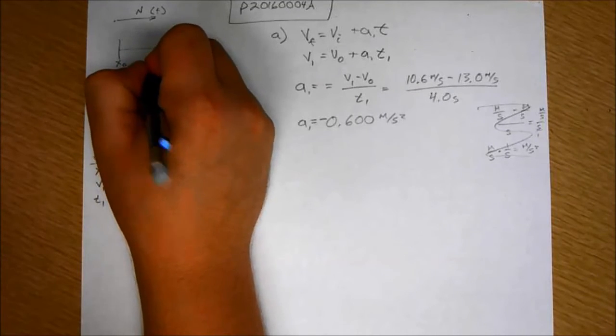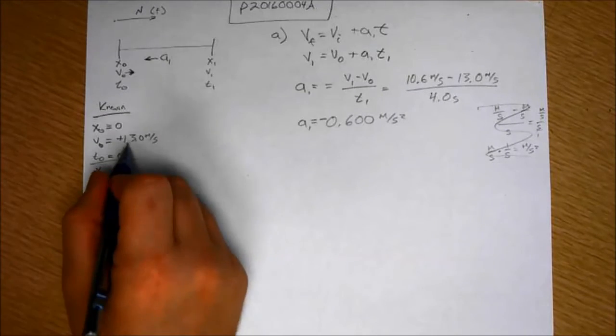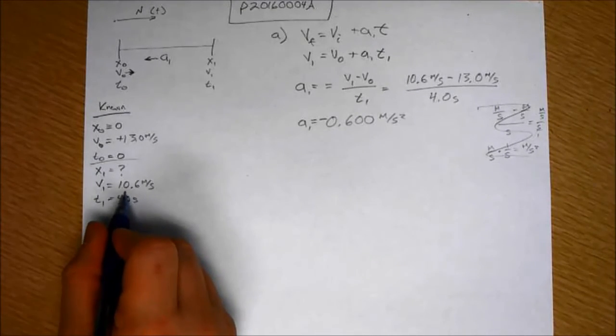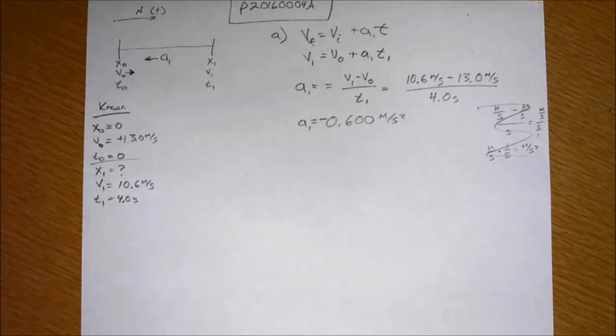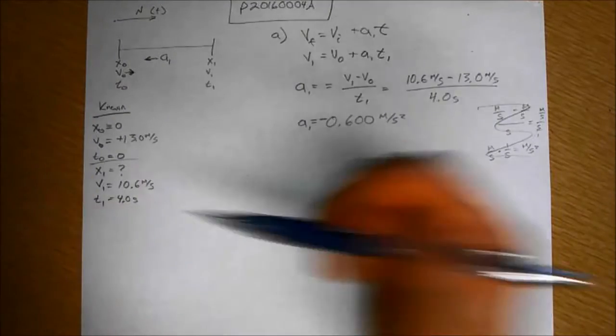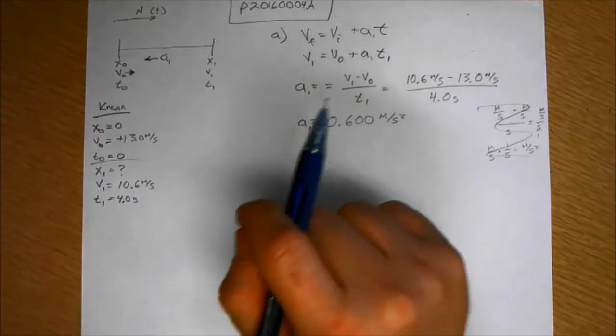It's in the negative direction because he's slowing down. He starts at 13 meters per second, he ends up at 10.6 meters per second. So acceleration is negative. You could do, you would know that without even solving the problem.